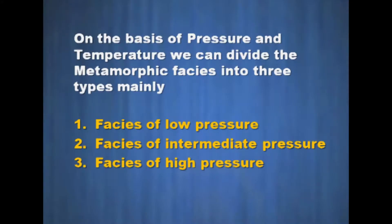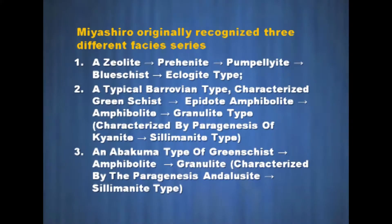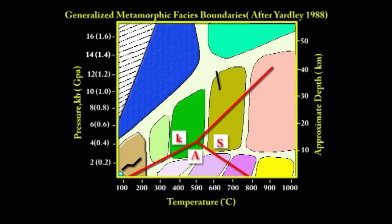On the basis of pressure and temperature, we can divide the metamorphic facies into three types: mainly facies of low pressure, second facies of intermediate pressure, and third facies of higher pressure. Miyashiro originally recognized three different facies series — first: zeolite, prehnite, pumpellyite, blueschist, eclogite type.